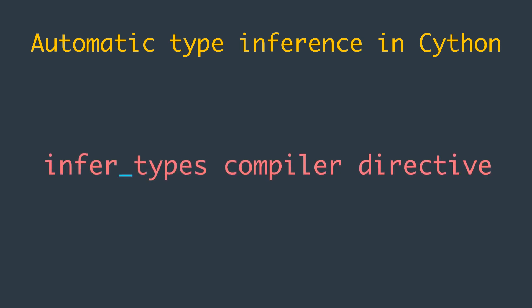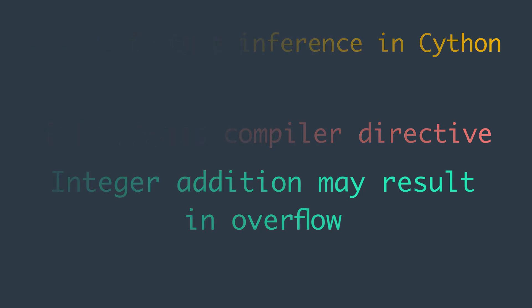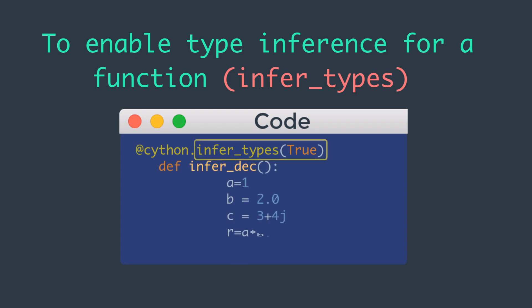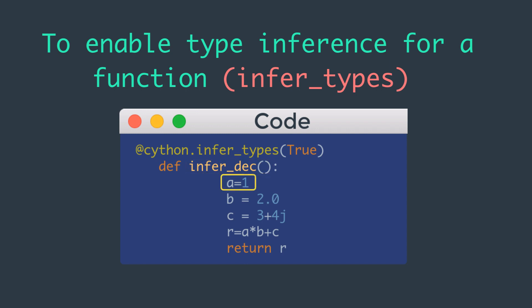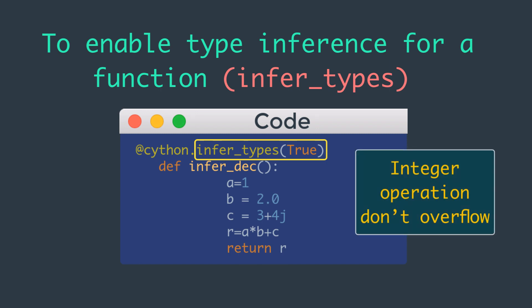By using the infer_types compiler directive, we can give Cython more freedom to infer types in cases that may change semantics — for example, when integer addition may result in overflow. To enable type inference for a function, we use the decorator from infer_types. When infer_types is enabled for the infer_dec function, the variable a is typed as a C long, b is a double as before, and both c and r are C-level complex variables. One important consideration: when enabling infer_types, we take responsibility to ensure integer operations don't overflow and that semantics don't change from the untyped version.